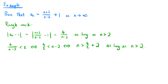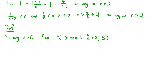We set up the inequality 4 over (n minus 2) less than epsilon and solve for n. This is equivalent to 4 over epsilon less than n minus 2, which is equivalent to n greater than 4 over epsilon plus 2, again assuming n is greater than 2. For our capital N, not only do we need it to be greater than this expression, but we also need it to be greater than 2. So after fixing any epsilon greater than 0, we pick capital N to be greater than the maximum of (4 over epsilon plus 2) and 3, so that it exceeds this expression and is also greater than 2.